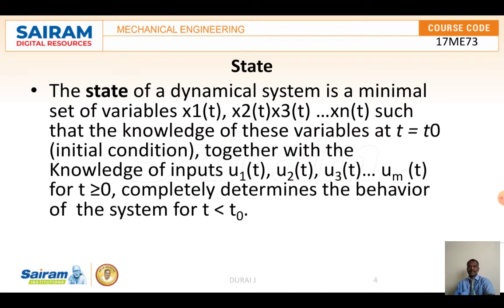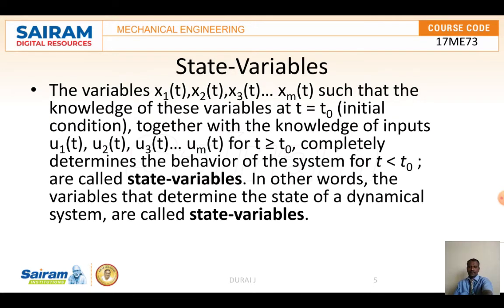Now we come to the definition of state. For a dynamical system, it is a minimal set of variables X1(t), X2(t), X3(t) up to Xn(t) such that the knowledge of these variables at t equal to t0 — usually taken as initial conditions — together with the knowledge of the inputs u1(t), u2(t), u3(t) up to um(t) for t greater than or equal to t0, completely determines the behavior of the system for t greater than t0.